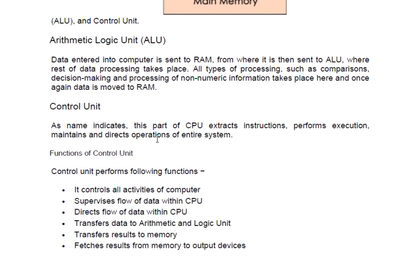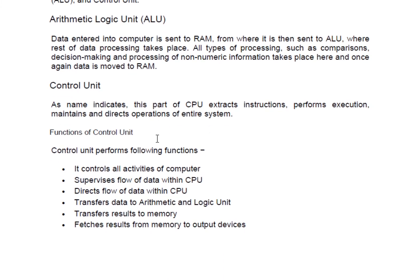Now, the control unit — as the name indicates — is the part of the CPU that accepts instructions, performs execution, and maintains and directs the operation of the entire system. The control unit actually controls where the data should be transferred, that is, the flow of data. For example, if you give a print command to the computer, the control unit decides where to send the data — whether it should go to the monitor or the printer.